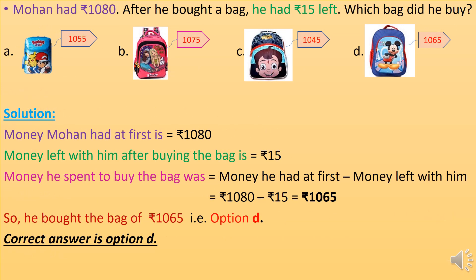Mohan had rupees 1080. After he bought a bag he had rupees 15 left. Which bag did he buy? Money he spent on the bag equals money he had at first minus money left, that is 1080 minus 15 equals rupees 1065. So he bought the bag of rupees 1065. The correct answer is option D.